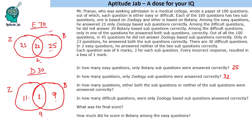Third question: in how many questions were either both sub-questions or neither sub-questions answered correctly? Both is 23, and neither is 9 plus 2 equals 11, giving a total of 34. Fourth question: in how many difficult questions were only zoology-based sub-questions answered correctly? The answer is 11.